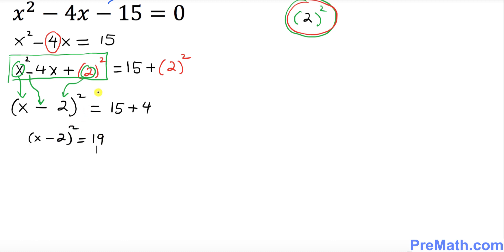(x - 2)² turns out to be 19. We want to solve for x, so I want you to take the square root because we want to get rid of this square. We're going to take the square root on both sides.